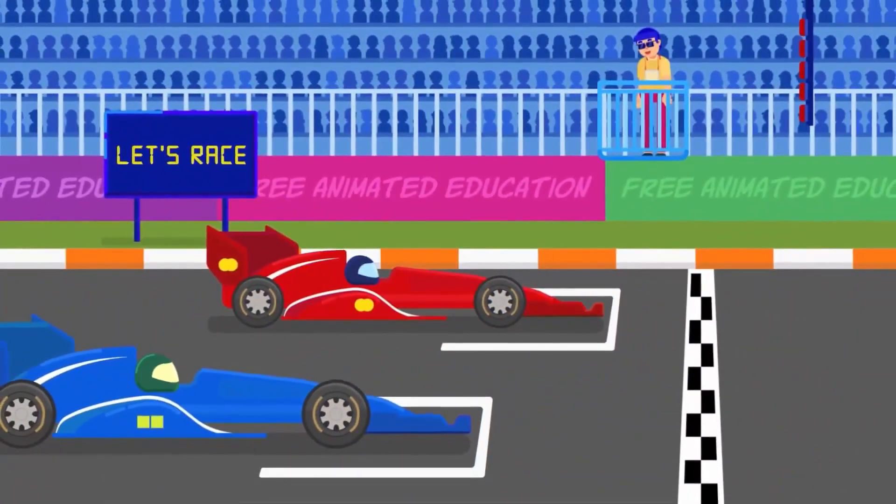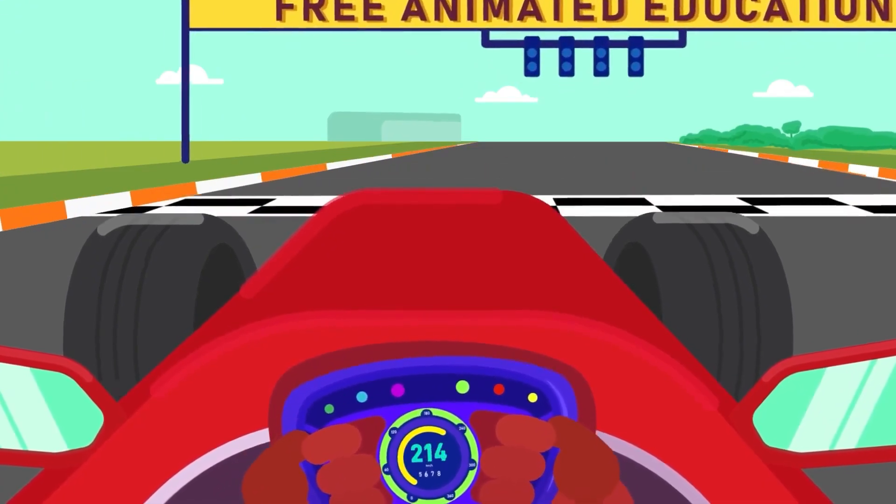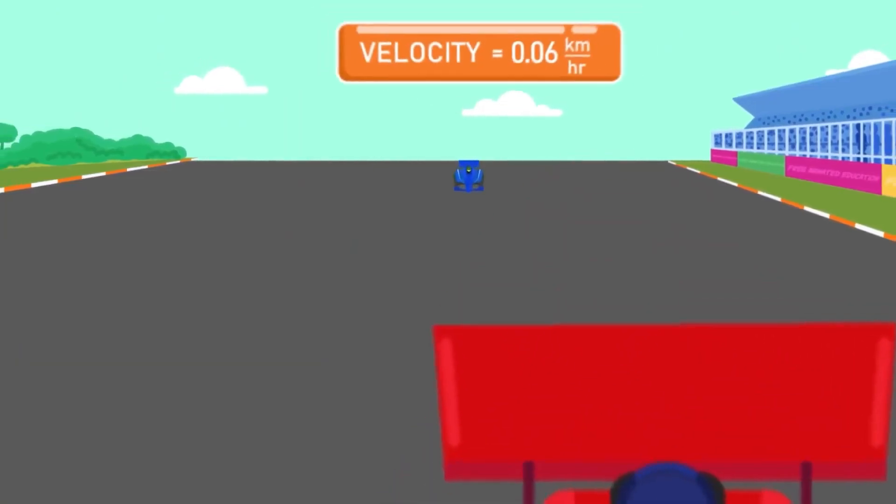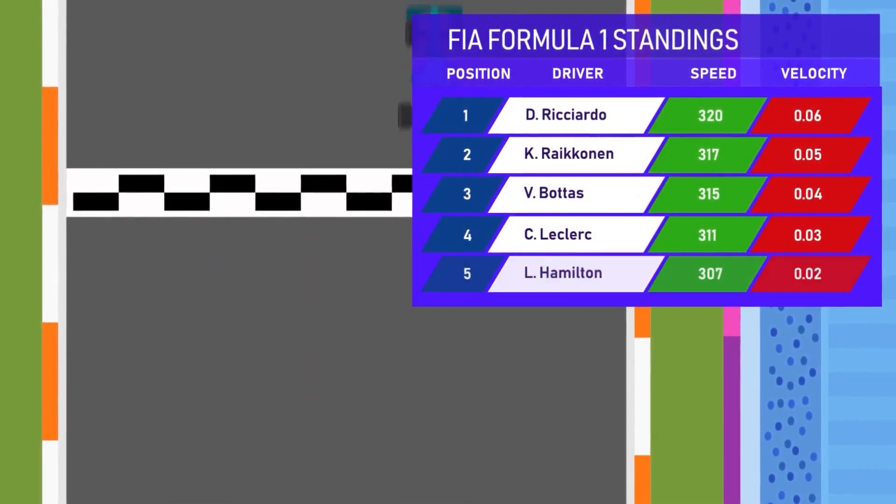Have you ever watched Formula 1? Many racers compete in a circuit to be the fastest to cross the finish line. Their maximum speed can reach 360 kilometers an hour, but right when they get across the finish line, their velocity is almost zero. How is that possible?